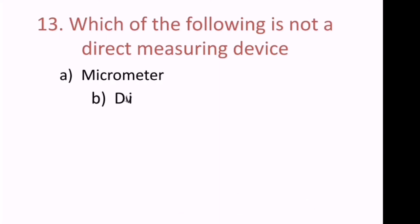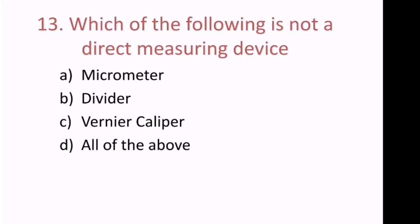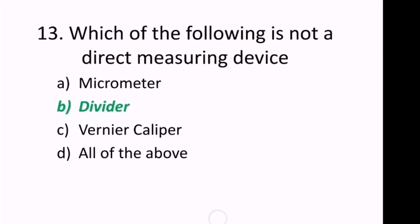Thirteenth question: Which of the following is not a direct measuring device? The options are micrometer, divider, vernier caliper, or all of the above. The correct answer is divider — a divider is not a direct measuring device.